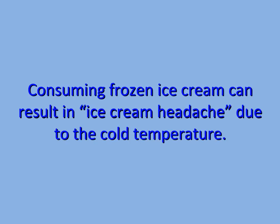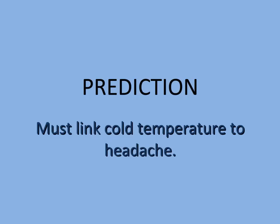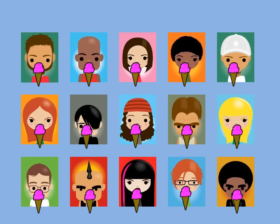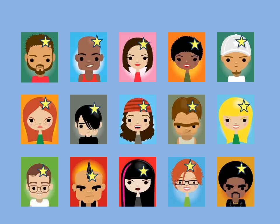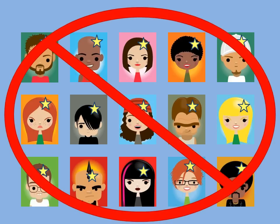Now it's time to make a prediction based on our hypothesis. If we are correct about our hypothesis, then we must be able to link the cold temperature of the ice cream to the ice cream headache. It seems simple — just get some people to eat ice cream and they should get a headache. They all got headaches. But does that really test the temperature? No. It could be something else in the ice cream, not just the temperature.